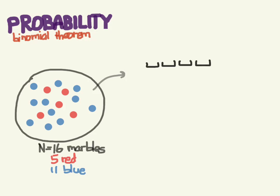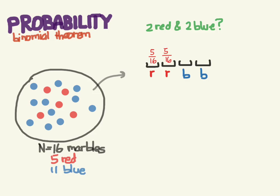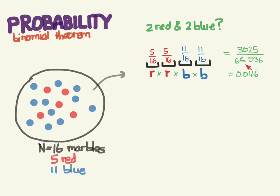You pull out four marbles. What is the probability of pulling out two reds and two blues? You might say that's easy: two reds, two blues. The probability of pulling a red is 5/16, and the probability of pulling a blue is 11/16. We want red and red and blue and blue, and the 'and' means we multiply. Multiplying all four gives us 3025 over 65,536, or 4.6%.